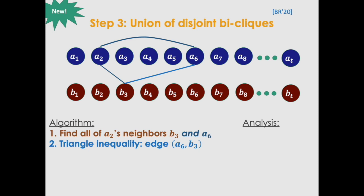So now by triangle inequality, we also know that a6 is close to b3. So here's an idea. Let's consider intervals around a6 and b3.